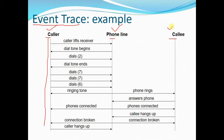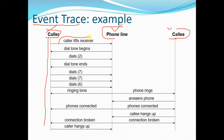We draw lines of association from one class to the next. This is the object caller, this is the object of phone line, and this is the object of calling. When the caller tries to make a call, the caller lifts the receiver and connects with the phone line.